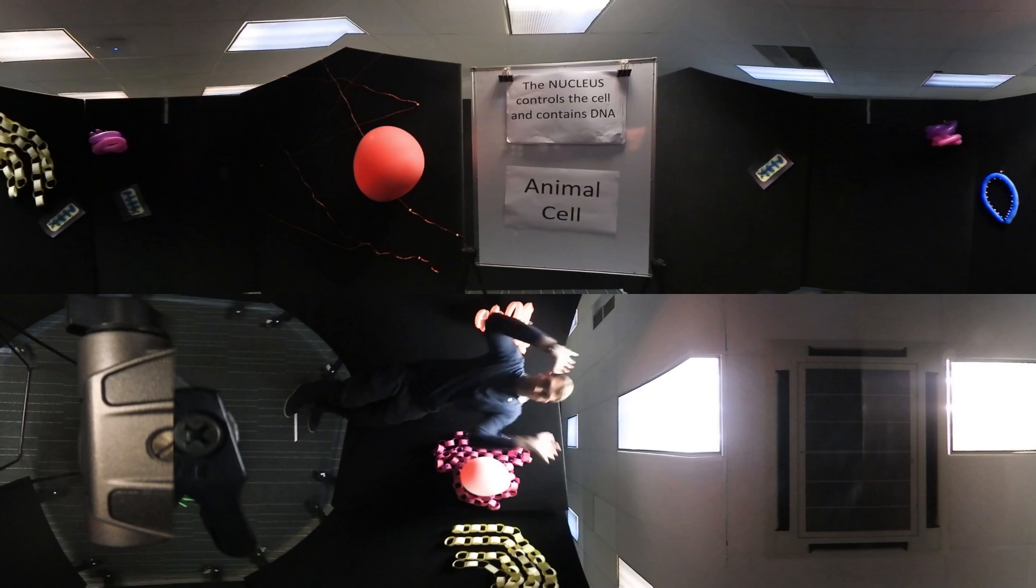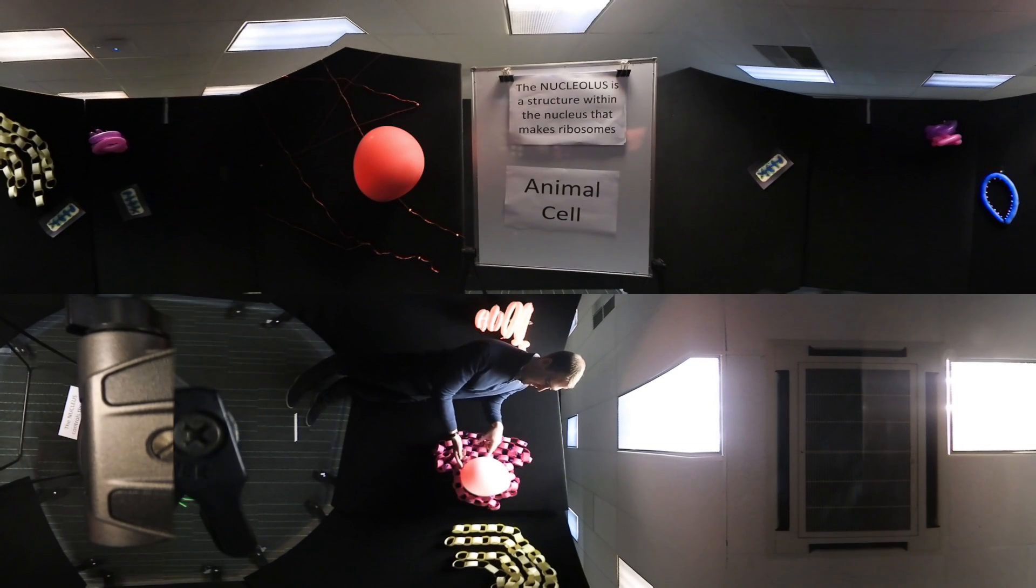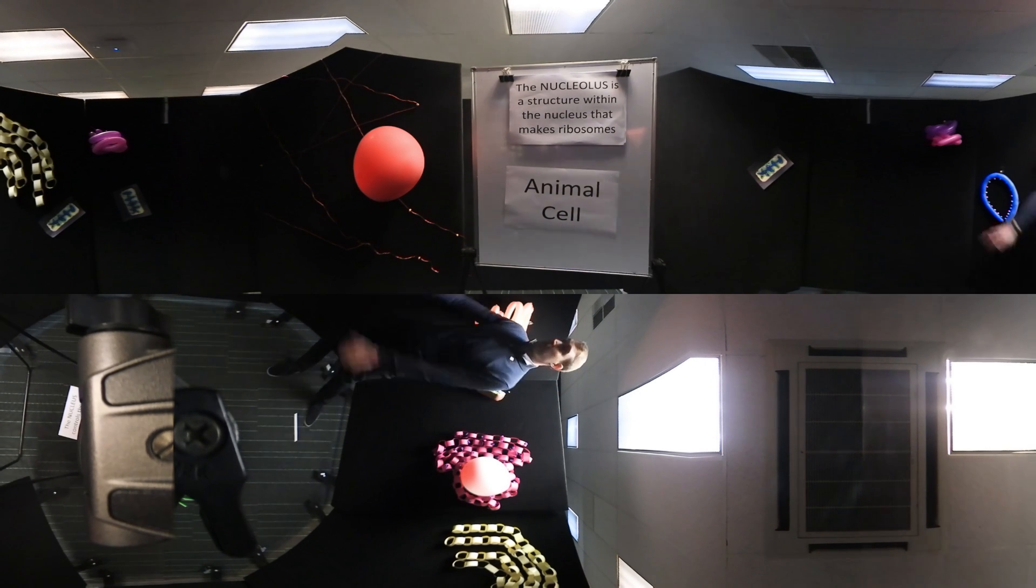Let's have a look at the nucleolus now. Inside the nucleus you'll see a dark spot there. That's the nucleolus. The nucleolus is a granular structure and its job is to make ribosomal RNA which goes together to make ribosomes.